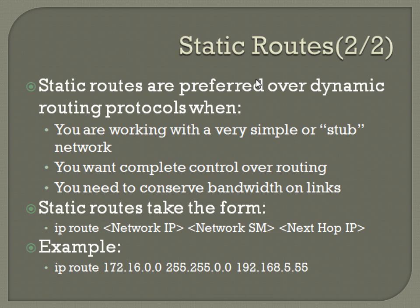Static routes take the form of: IP route, the network address of the block, the subnet mask of that block, and then the single IP of the next hop address. For example: 172.16.0.0, 255.255.0.0, to the address 192.168.5.55.